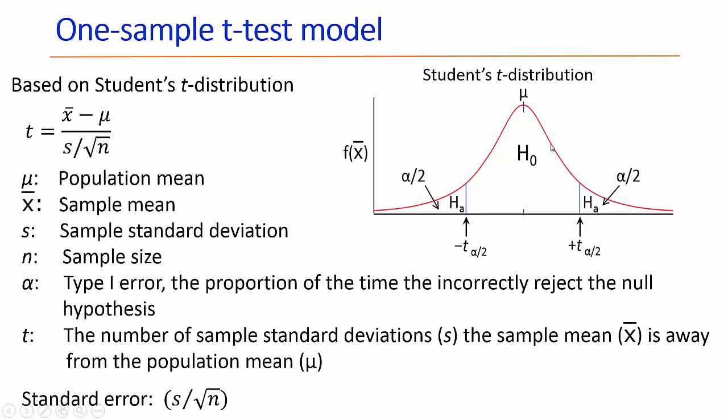The model is based upon the student t-distribution, which is shown by this graph. It looks a lot like a normal curve, except the shape of the distribution changes with the sample size, and we call that parameter degrees of freedom. The tails, in this case we're showing a right tail and a left tail, are larger than observed in a normal curve.